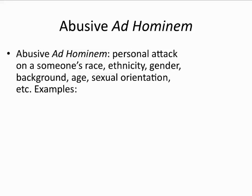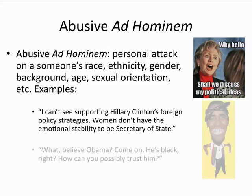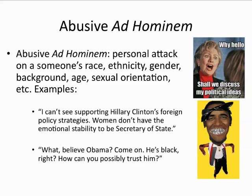We begin with the abusive ad hominem, which is a personal attack on the arguer's race, ethnicity, gender, education, age, sexual orientation, or other personal attribute. Look at these examples: "I can't see supporting Hillary Clinton's foreign policy strategies — women don't have the emotional stability to be Secretary of State." Here's a second example: "Believe Obama? Come on, he's Black — how can you possibly trust him?" Both of these examples rely on personal abuse to challenge an argumentative position.